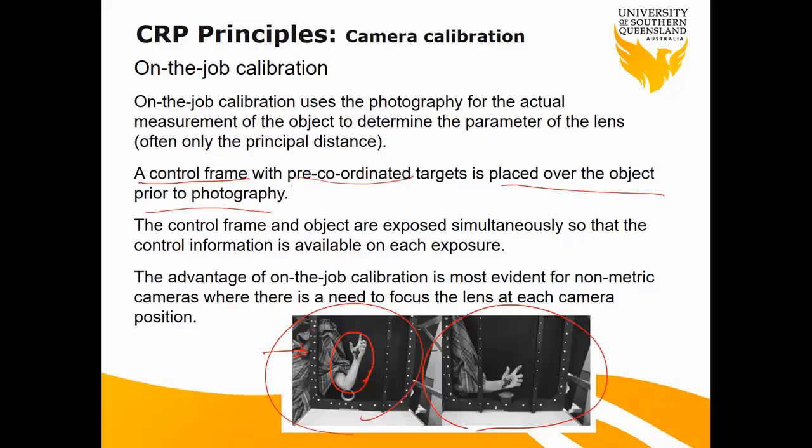Is on-the-job calibration useful in surveying applications? Not too often. On-the-job calibration is good mostly for industrial purposes or medical science where the object is not too big. In our purpose, for example, if you want to take a photo of a dam, you can't fit the dam and the frame at the same time. So on-the-job calibration is not so common in surveying. It's very useful for non-metric cameras where there is a need to change focus every time. For medical science, sometimes they want to change zoom or focus, and then the other technique doesn't work — they have to do calibration on the side.